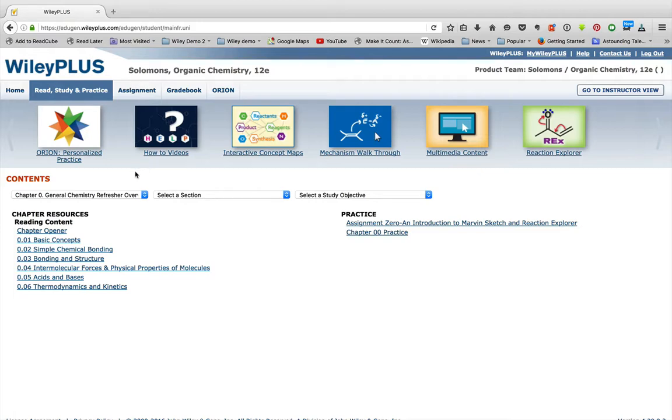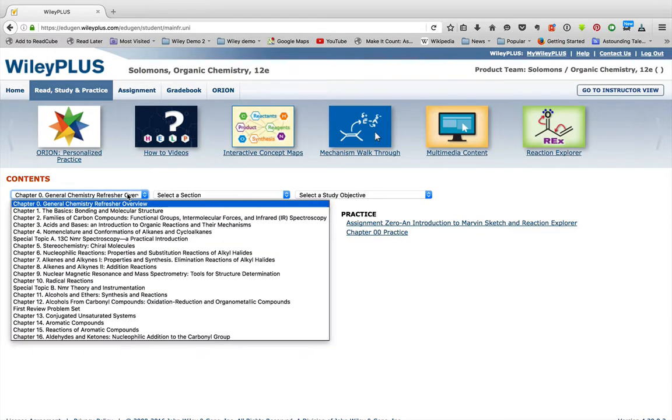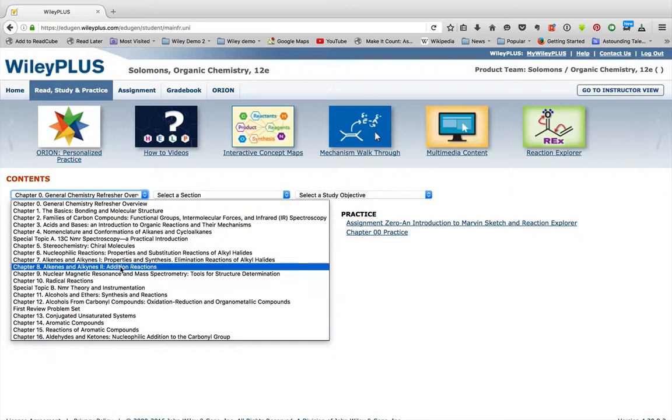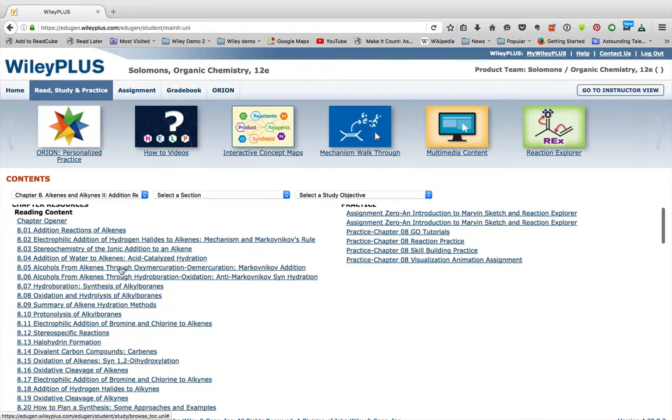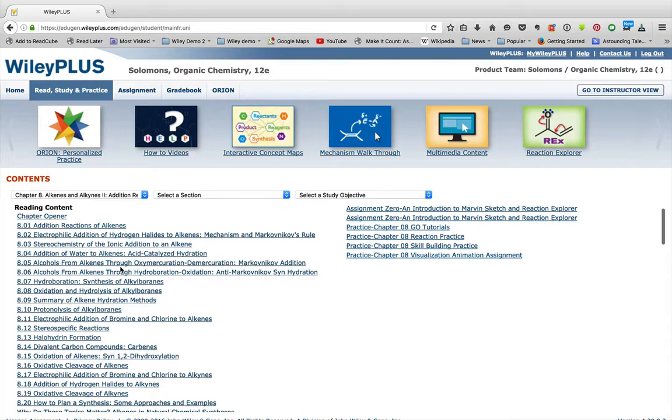Across the top you have some banner items which we'll talk about in a different video, but down here you can select your chapters. So let's select Chapter 8. The textbook will open, and the textbook is just like the printed textbook except we have some additional resources in there.